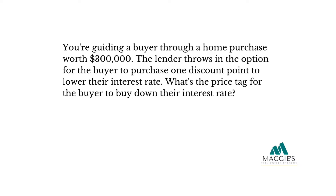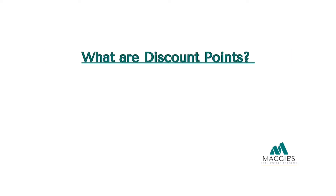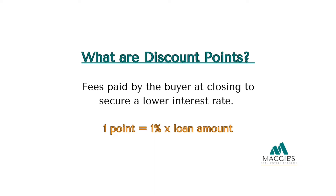Let's jump into discount points. You're guiding a buyer through a home purchase worth $300,000. The lender throws in the option for the buyer to purchase one discount point to lower their interest rate. What is the price for the buyer to buy down their interest rate? The buyer needs to shell out $3,000 for discount points. Remember, one discount point equals 1% of the loan amount, paid up front at closing to secure a lower interest rate for the borrower.